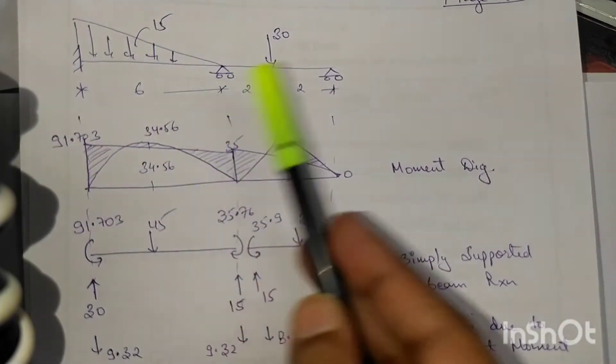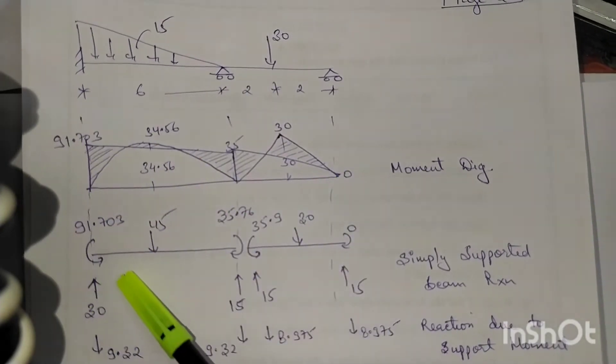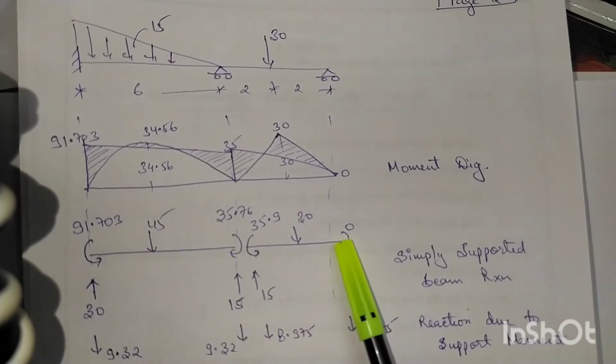Next, we got all the moment diagram. Whatever moments we got, we have just simply traced it along with simply supported bending moment.